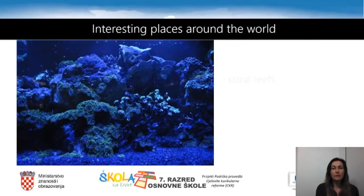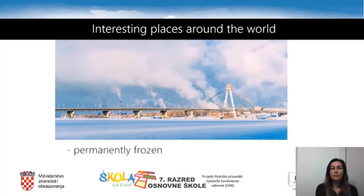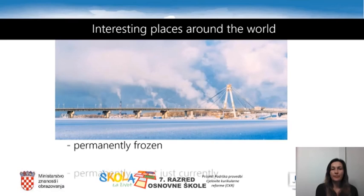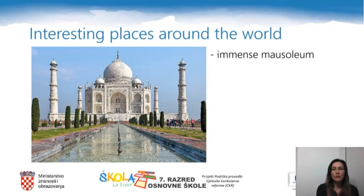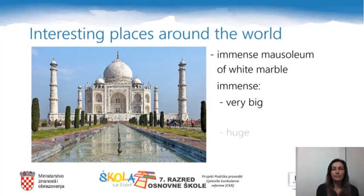Some places are famous for their beautiful coral reefs. Some places are permanently frozen. Permanently means always — not just currently, not just now. We shouldn't forget immense mausoleums of white marble. Immense means very big, huge, giant, vast — they all mean the same.